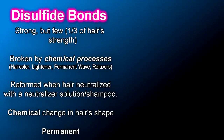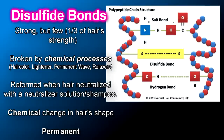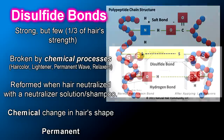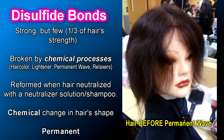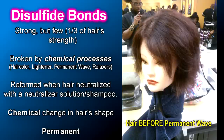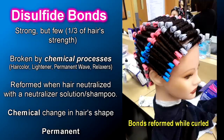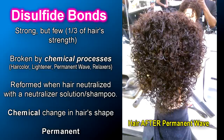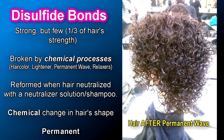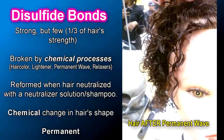Now let's discuss disulfide bonds. There are fewer disulfide bonds than hydrogen or salt bonds, but they are stronger and account for another one third of the hair's strength. These bonds are not affected by water or heat, but rather they are only broken by chemical processes, which includes hair color, lightener or bleach, permanent wave, or chemical relaxers. These bonds are reformed once the solutions have been rinsed out completely and neutralized with either a neutralizer or neutralizing shampoo. Changes in your disulfide bonds are considered a chemical change, and because of this, it is a permanent change — you cannot restore your disulfide bonds back to their original state after they have been altered.